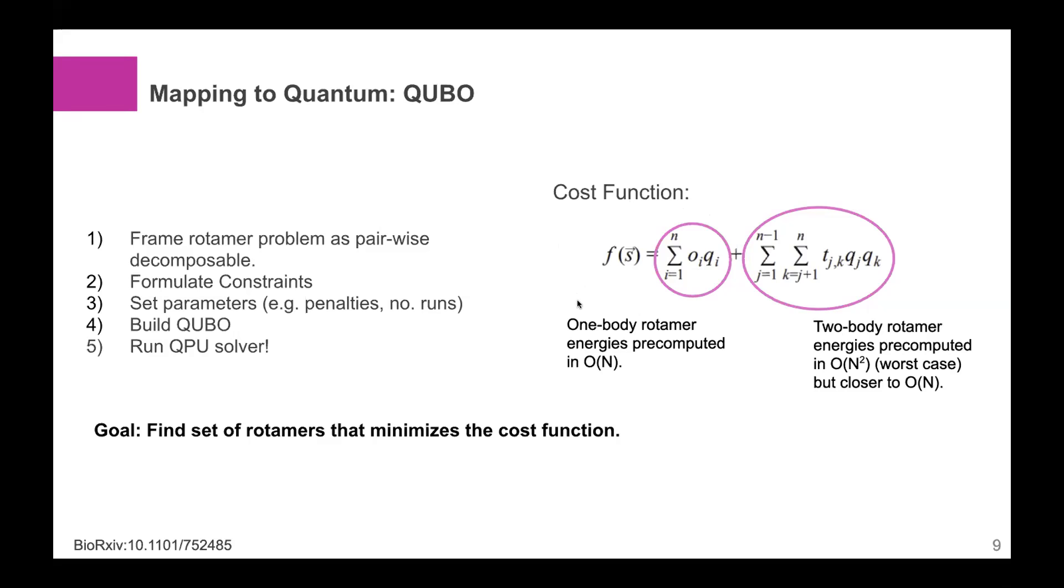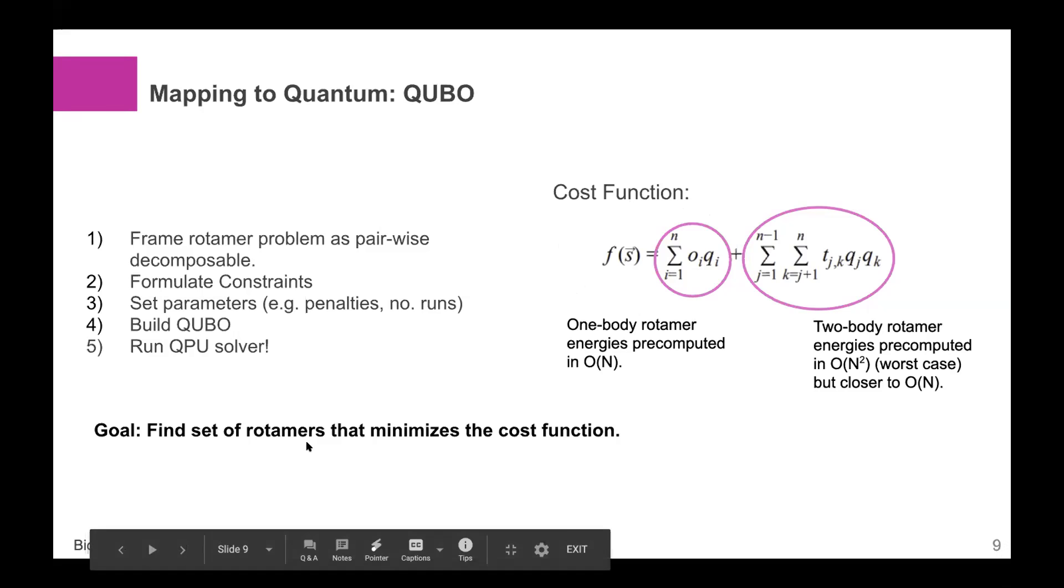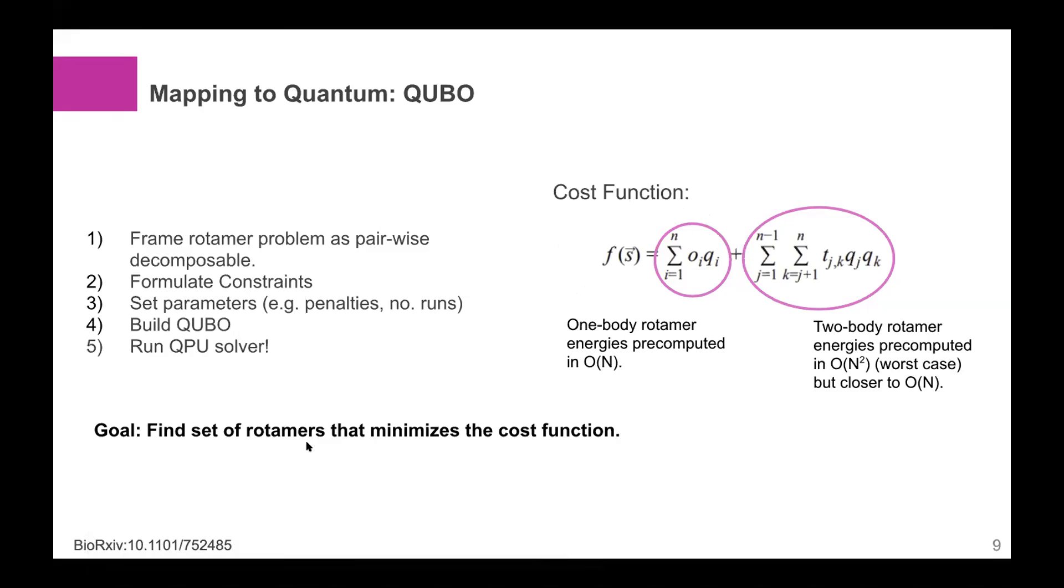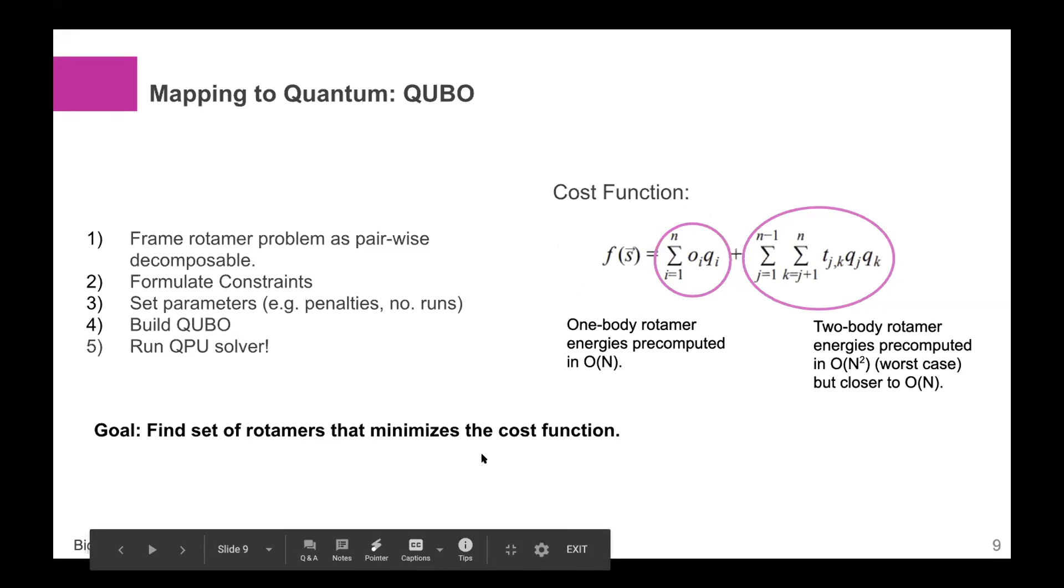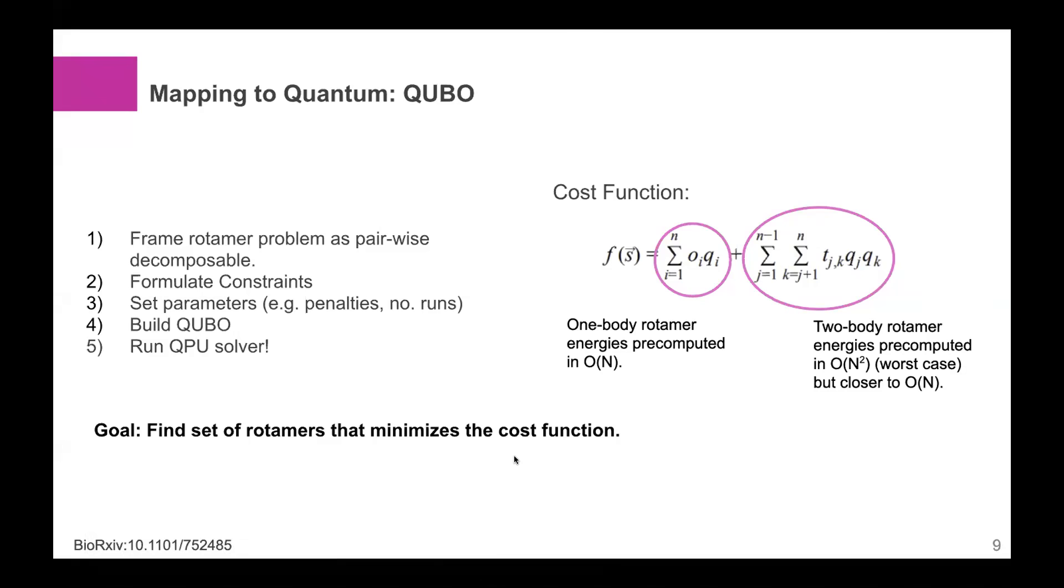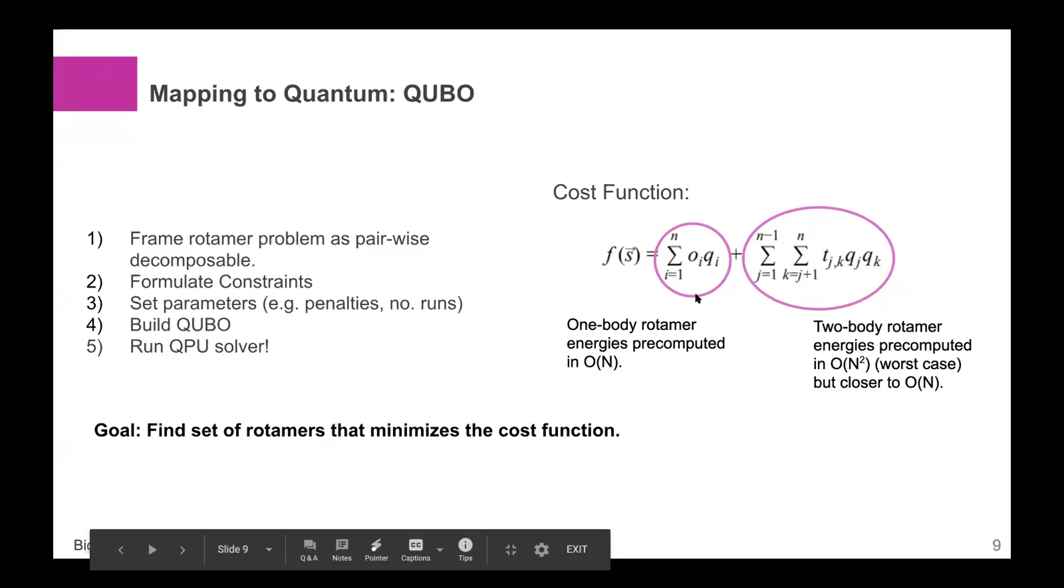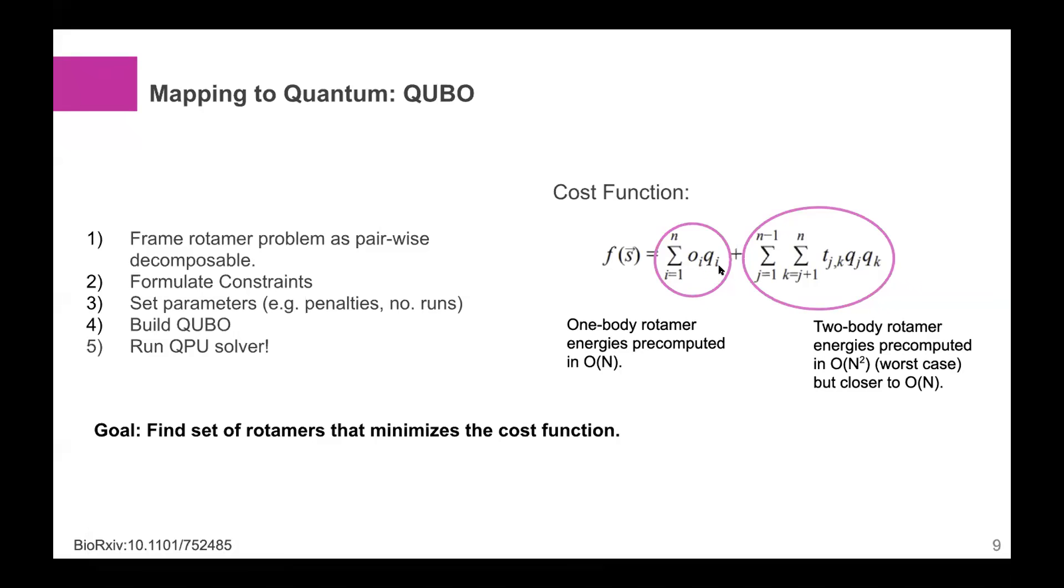And so this is here the cost function we're trying to minimize. We're trying to find a set of rotamers at each position, such that we minimize the total energy of the system. So our cost function, quite literally in this formulation, would be the sum of the one-body energy terms and the two-body energy terms.